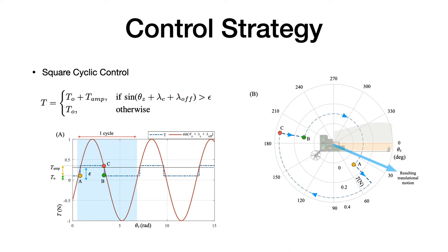The blue dashed line is the control signal sent to the thruster. During certain periods of one cycle of rotation, it increases its output by Tamp. The platform can therefore achieve translational motion.